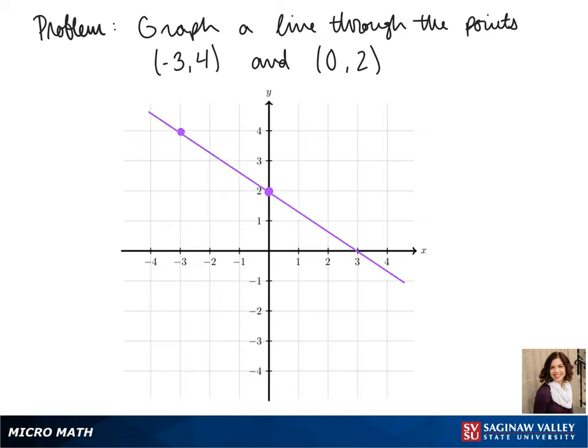From our graph, we can also see that our line passes through the x-axis at positive 3.